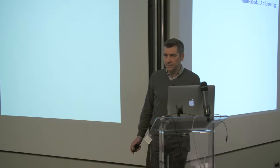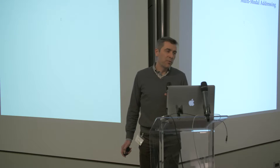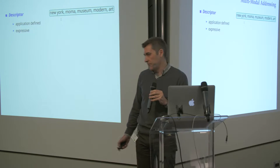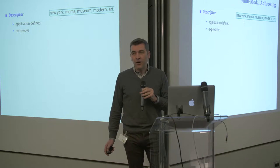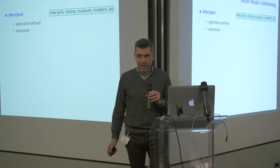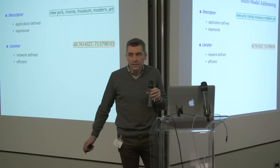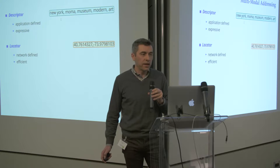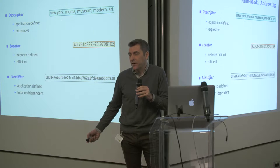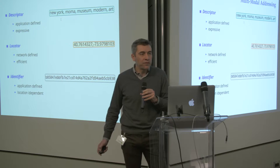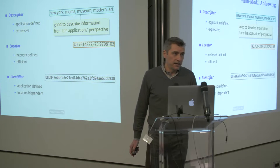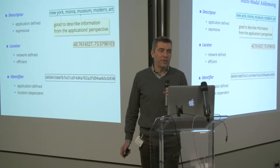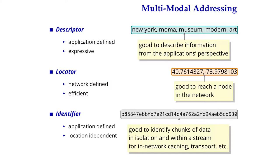The main idea I'm proposing is to break apart — to undo the triple duty bundled into names. I want something that deals with the network address part of the name, something that deals with the descriptor of the object, and something that deals with transport and caching. So I'm proposing three forms of addresses: descriptors, which are application-defined and expressive; locators, which are opaque network-defined addresses that the network understands efficiently; and identifiers, which are unique identifiers of content or chunks of content used for caching and transport.